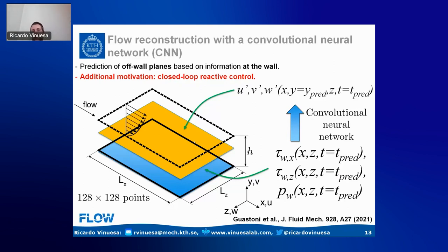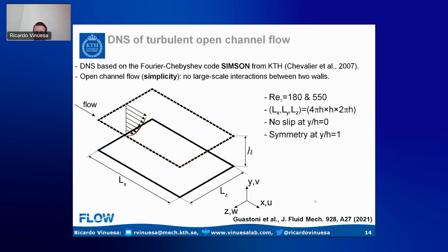This is interesting from the perspective of closed-loop control, because if I know what the flow is doing I can have better chances of controlling it and achieving drag reduction. All these results are shown in a Journal of Fluid Mechanics paper. The computations were conducted using the Fourier-Chebyshev code Simson from KTH. We performed two DNS runs at Re_tau = 180 and 550, using open channels to simplify the dynamics of the large scales.